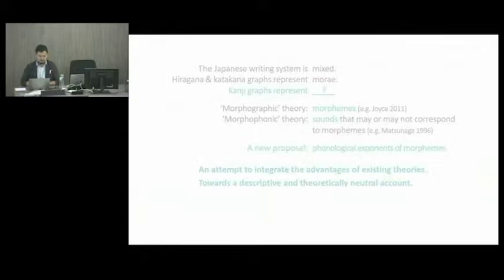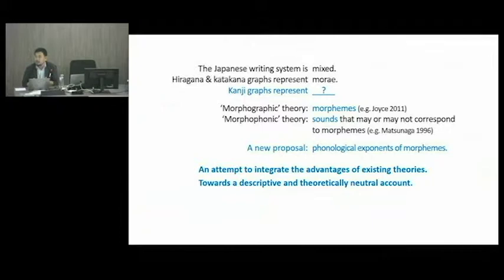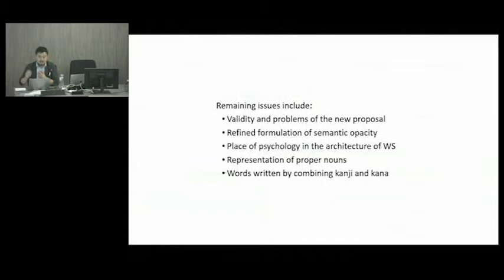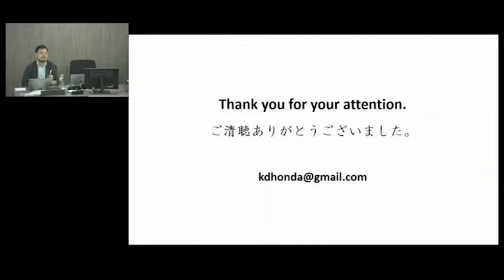I would like to have a descriptive and theoretically neutral account of how kanji graphs function in today's Japanese — a strictly synchronic approach, even though history does have a huge impact on today's written form of the language. There are many remaining issues, and I would appreciate your input. Thank you for your attention.